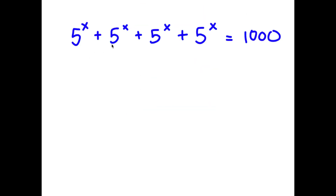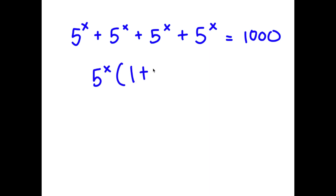In this problem, I have 5 to the power of x plus 5 to the power of x plus 5 to the power of x plus 5 to the power of x is equal to 1,000. I'm going to first start by factoring out 5 to the power of x. So now I have 5 to the power of x times (1 plus 1 plus 1 plus 1) is equal to 1,000.